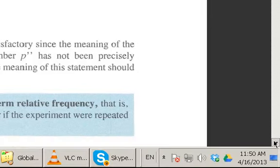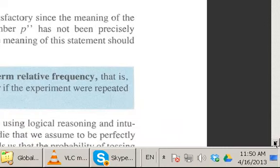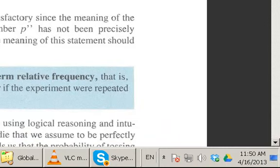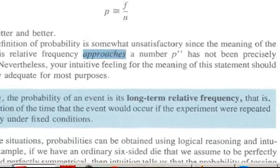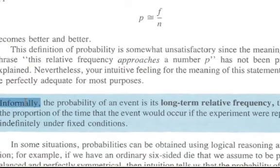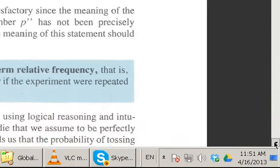We usually use the notation of limit here, but they're avoiding that in this book. Informally then, not formally, the probability of an event is its long-term relative frequency. That is, the proportion of the time that the event would occur if the experiment were repeated indefinitely under fixed conditions.